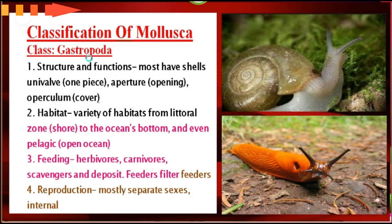The third class is Class Gastropoda. Most have shells — a uniwell, meaning one piece — with an aperture (opening) and an operculum (cover). Their habitat includes a variety of environments from the littoral zone to the ocean bottom and even open oceans. Feeding is mostly herbivorous and carnivorous, including scavengers, deposit feeders, and filter feeders. Reproduction is mostly with separate sexes and internal. These are the representative members of this class.